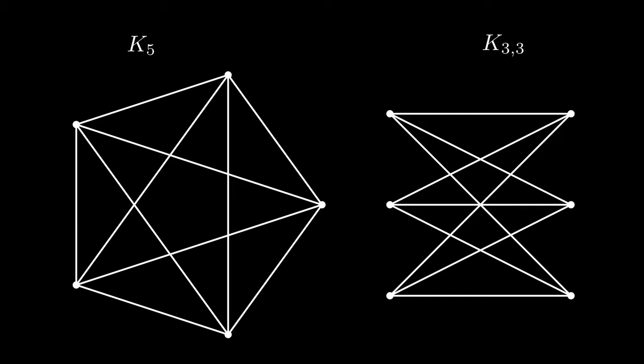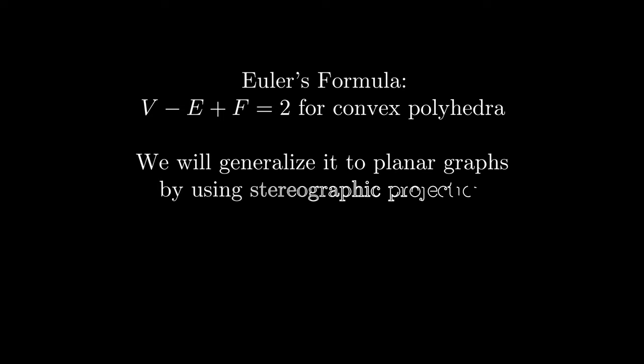On the right we have K3,3, which is the bipartite graph on six vertices. This means that there's two groups of three vertices, and each vertex is connected to every vertex in the other group, and there's no edge between any two vertices in the same group.